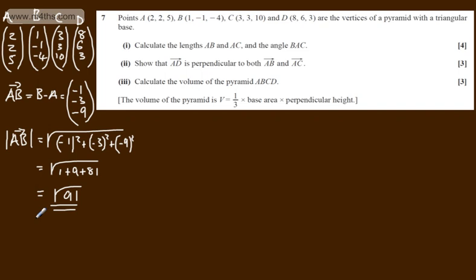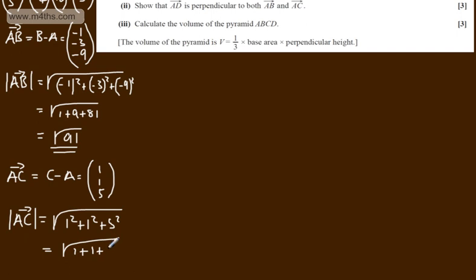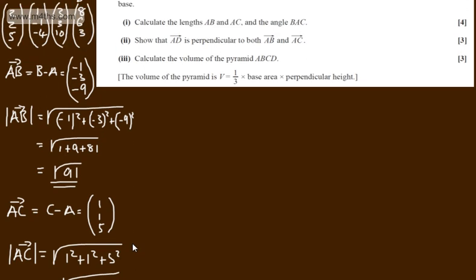Now let's look at AC. The vector AC equals C minus A, which gives (1, 1, 5). The modulus of AC, using Pythagoras, is √(1² + 1² + 5²) = √(1 + 1 + 25) = √27, or equivalently 3√3. It's entirely up to us whether we simplify that.